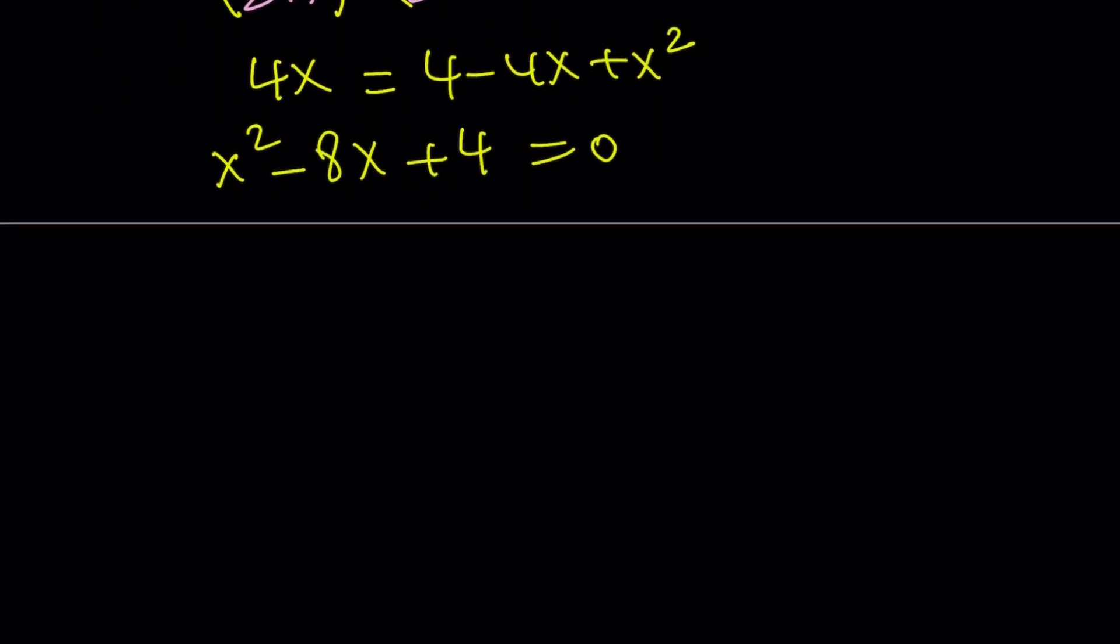That gives us x squared minus 8x plus 4 equals 0. This is a quadratic equation. It's not factorable, but we can solve it using the quadratic formula. The quadratic formula is negative b plus minus the square root of b squared minus 4ac over 2a, which is 8 plus minus the square root of 8 squared, which is 64, minus 4 times 4 times 1, which is 16. And that is divided by 2 times 1.